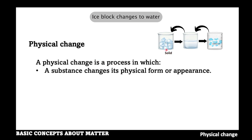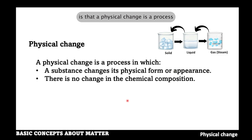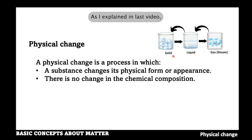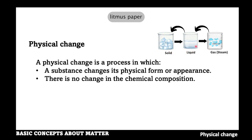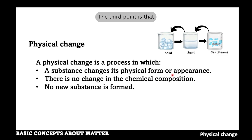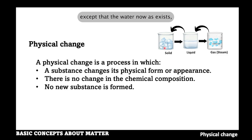An ice block changes to water and then to steam. The second point is that a physical change is a process in which there is no change in chemical composition. When each stage of this transformation is tested with litmus paper, the result shows that each stage contains water. The third point is that no new substance is formed — the water simply exists as a solid, liquid, or gas.